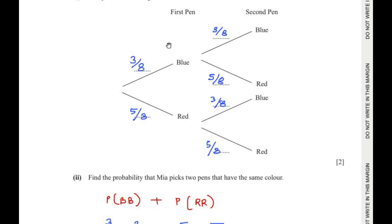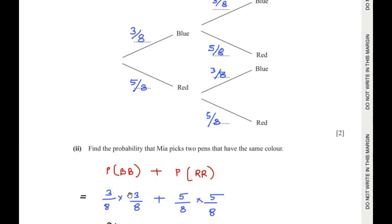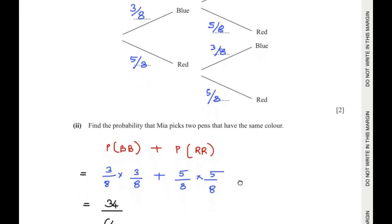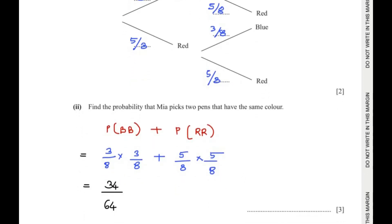The probability of getting blue and blue is 3 over 8 multiplied by 3 over 8. The same thing happens for red and red, so it becomes 5 over 8 times 5 over 8. So we have 3/8 × 3/8 plus 5/8 × 5/8. Solving this we get 34 over 64, and reducing it — since 2 goes into both — 17 times 2 is 34 and 32 times 2 is 64 — so the probability is 17 over 32.